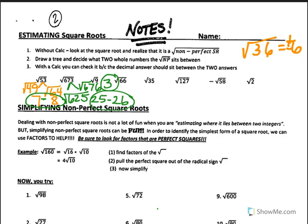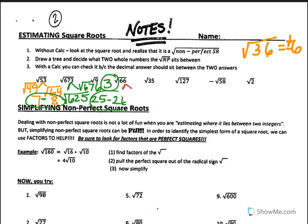What about the square root of 66? It would be between the square root of 49, which is 7, and the square root of 64, which is 8. Actually, the square root of 64 is 8 and the square root of 81 is 9. So the square root of 66 is going to be closer to 8.